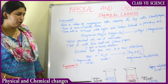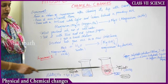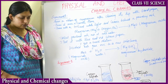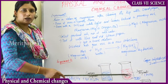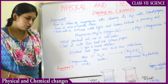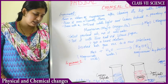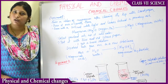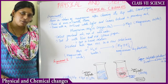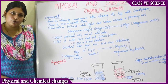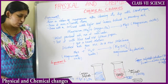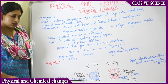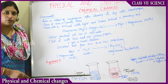Moving on to experiment number two. Take two glass beakers. In the first glass beaker, fill a solution of dilute sulfuric acid. The formula of sulfuric acid is H₂SO₄. Whenever you discuss any chemical thing, you have to speak with its formula. Dilute H₂SO₄ plus water H₂O plus copper sulfate CuSO₄ — add a mixture of these three substances to the first beaker.